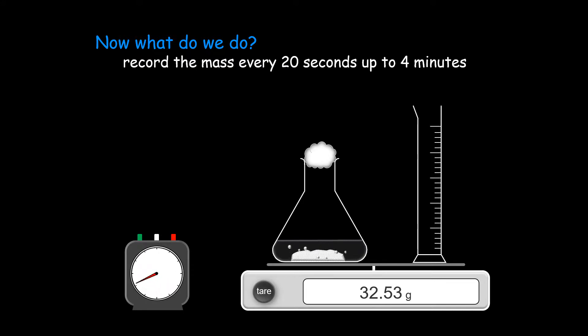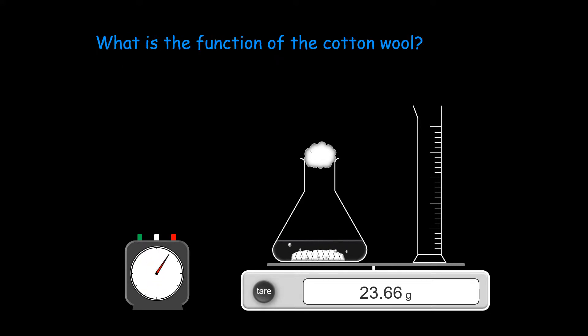Record the mass every 20 seconds up to 4 minutes. We can see the mass is decreasing because there is a gas being given off. The function of the cotton wool is to allow the carbon dioxide gas to escape but it stops the acid spray from escaping.